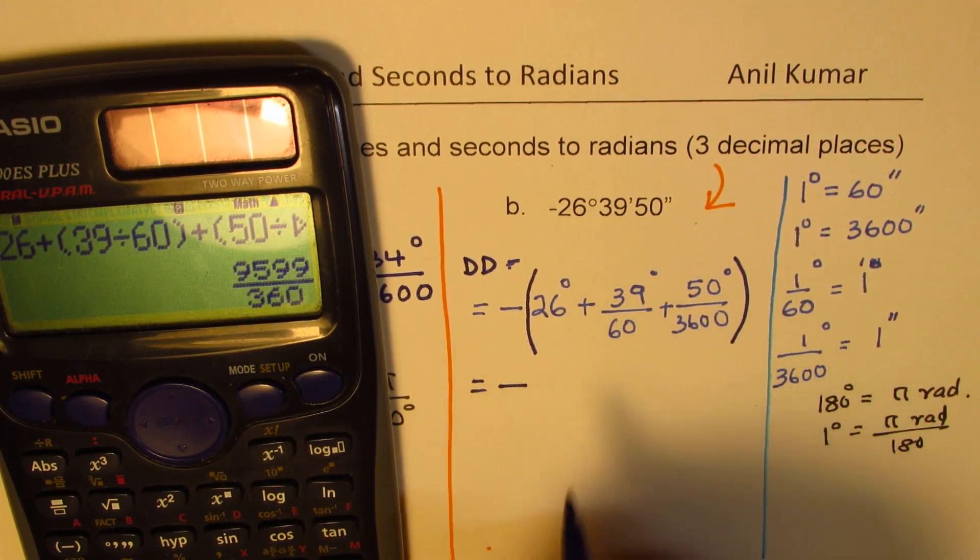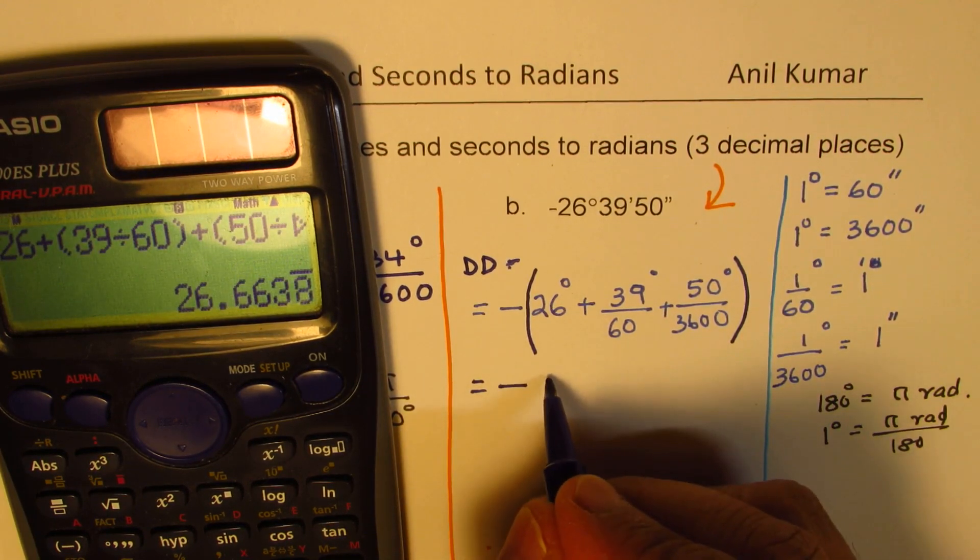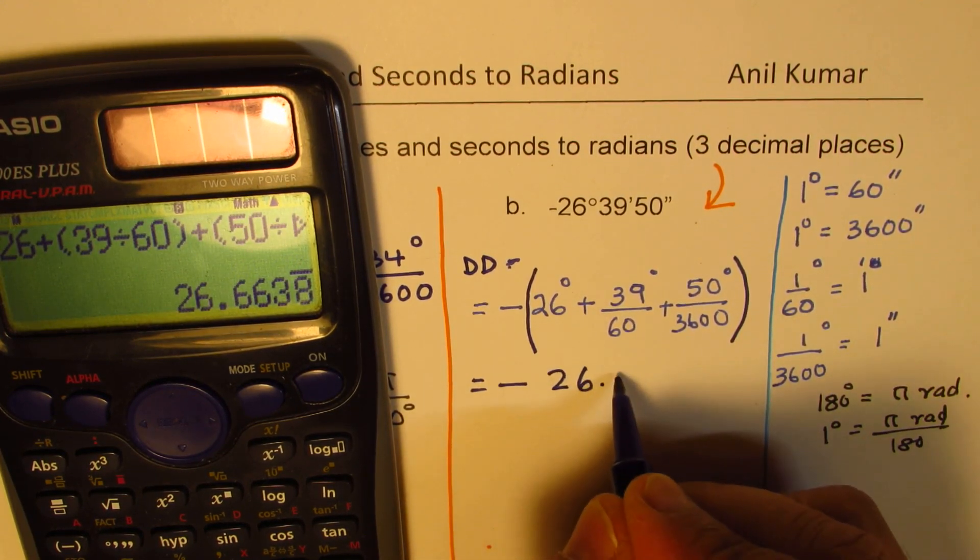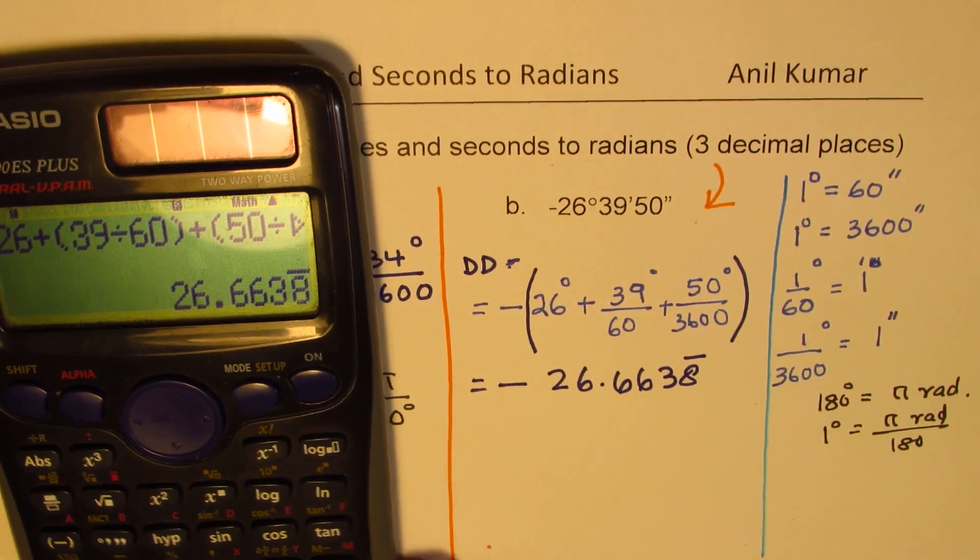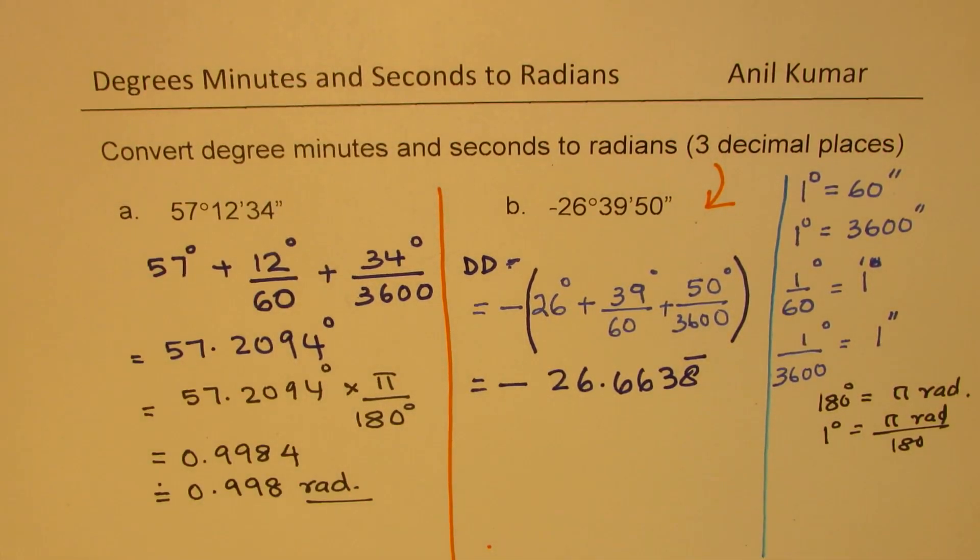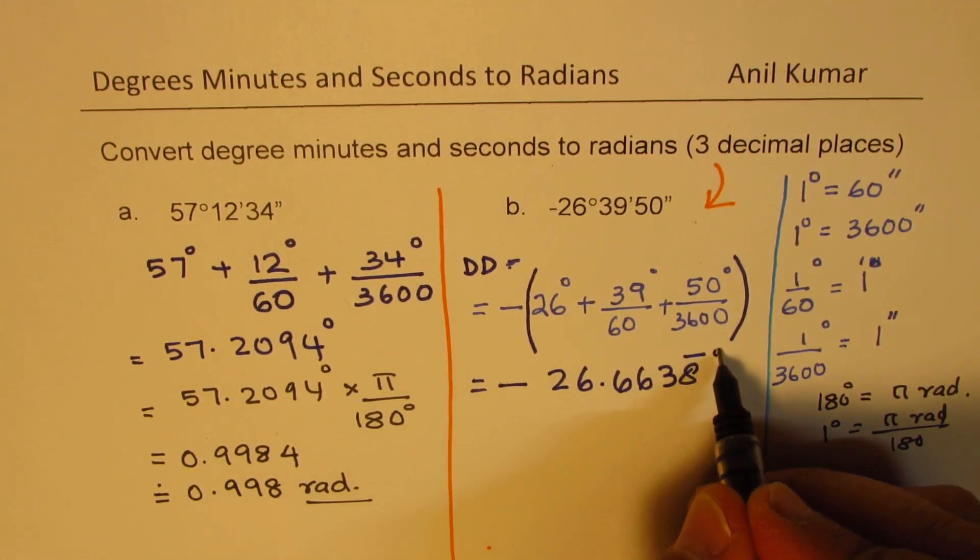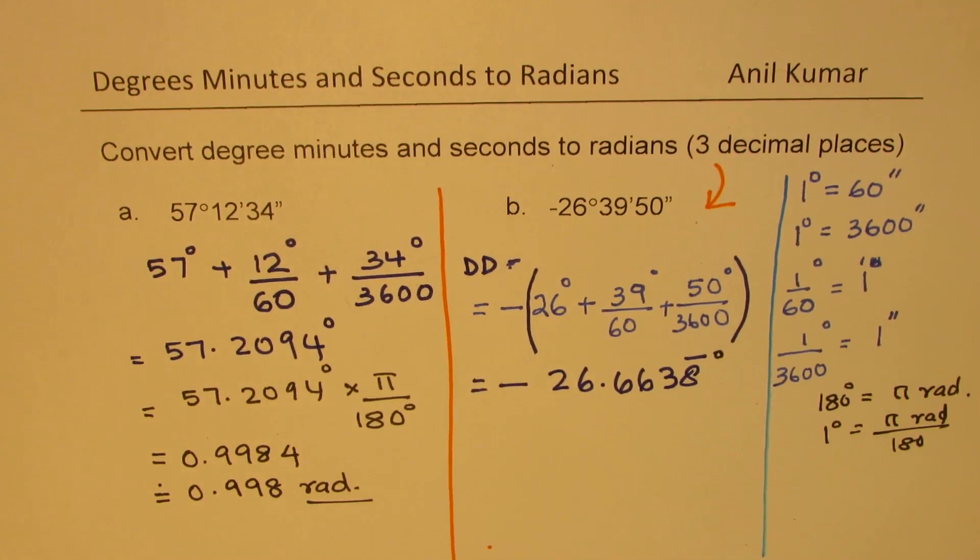plus within brackets 50 divided by 3600, which is equal to in decimals 26.6638. That is what it is equal to. Now, we are going to convert this to radians. So this is in degrees, but in decimals.